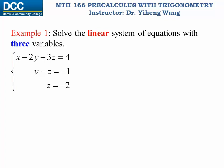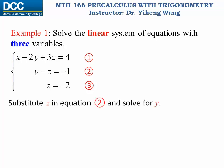From observation we can tell that this system is not that hard to solve. If we number these three equations one, two, three, then we can see that equation three — z equals negative two — is already part of the solution. Therefore we can substitute that into equation two, which has only variables y and z, and from equation two we can solve for y. So equation two becomes this with z substituted by negative two, and we can solve for y, which is negative three.